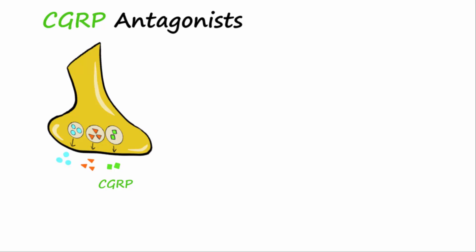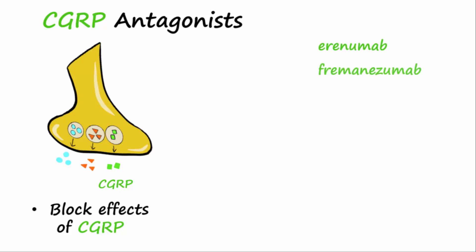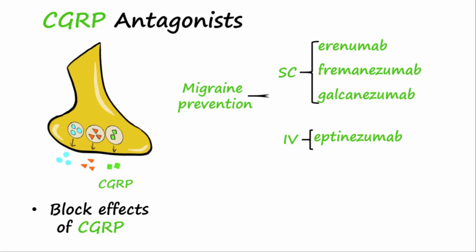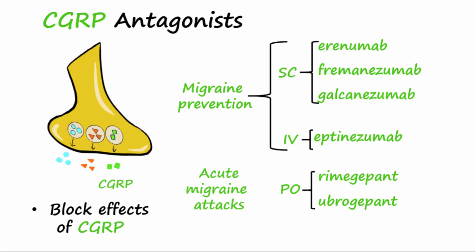A newer class of migraine medications are the CGRP antagonists. CGRP was one of the neuropeptides released from the trigeminal nerve and plays an important role in trigeminal vascular pain transmission in migraines. These drugs antagonize CGRP receptors or bind to the CGRP ligand, blocking the effects of CGRP. Erenumab, fremanezumab, and galcanezumab are given subcutaneously, and eptinezumab is given IV — these are used to prevent migraines. Rimegepant and ubrogepant are given orally and are used for acute migraine attacks.